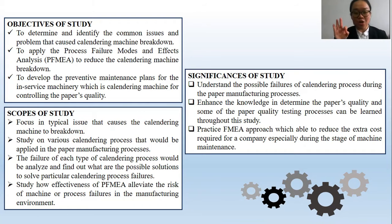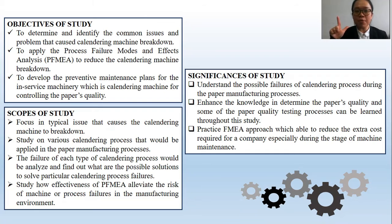There are also three significance of this study. First, to understand the possible failures of the calendering process during paper manufacturing. Second, to enhance knowledge in determining paper quality, and several paper quality testing processes have been learned throughout this research study. Third, practicing the PFMEA approach in order to reduce extra cost, especially in terms of machine maintenance process.